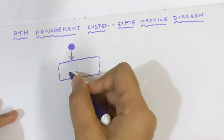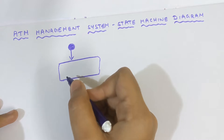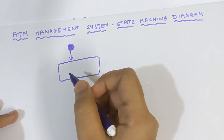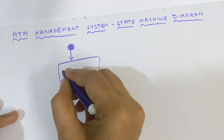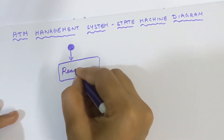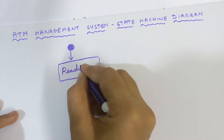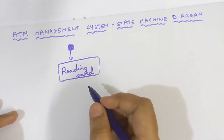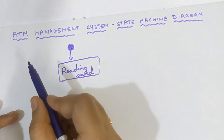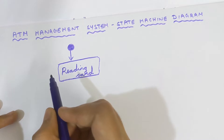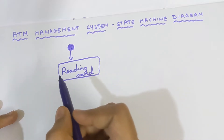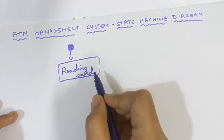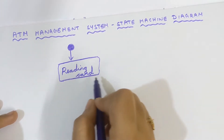Inside the state symbol, write the name of the state in a way that is understandable to everyone looking at the diagram. The first state is 'Reading the Card.' When you go to an ATM, the first step is to insert the card into the machine, and the ATM machine will read the card.